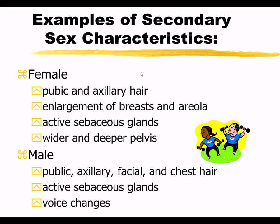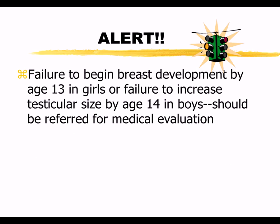On page 478, your book goes over the usual sequence of maturational changes, and Box 16-2 covers that for boys and girls — know those. Alert: failure to have breast development by age 13 in girls, or failure to increase testicular size by age 14 in boys, should be referred for medical evaluation — there may be something going on with the pituitary.